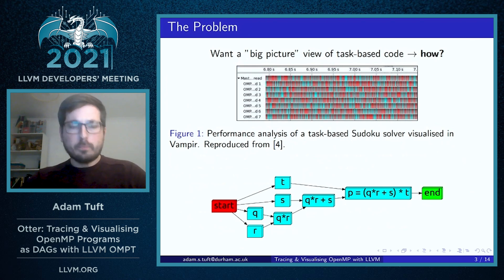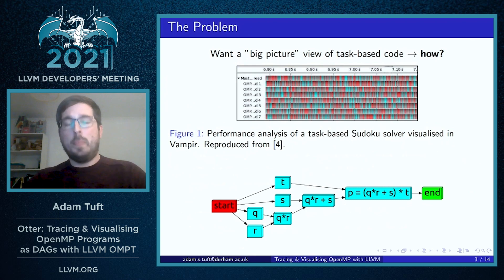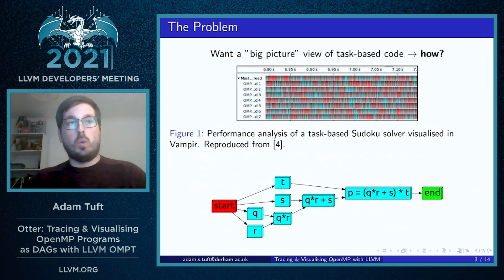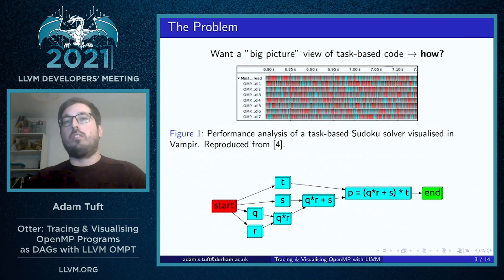Traditional thread-centric tools such as Vampir struggle to give a clear picture of the structure of this code. They will typically show you a particular realization of the scheduling of tasks as projected onto a set of threads at runtime.